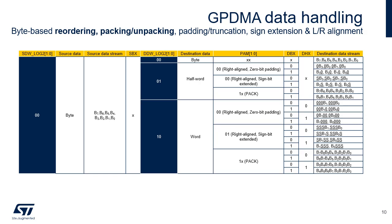For instance, the byte 7, byte 6, byte 5, and byte 4 word becomes the byte 6, byte 7, byte 4, and byte 5 word.